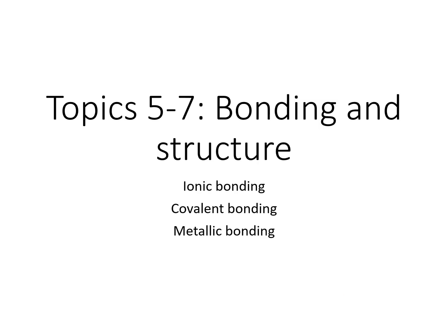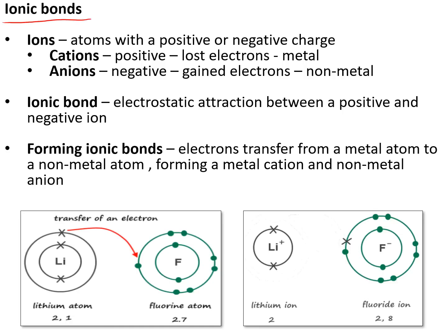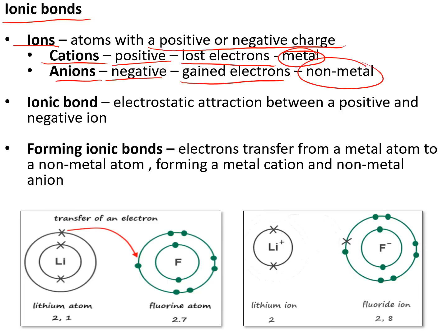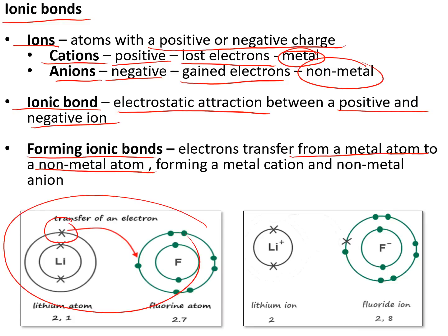Topics 5 to 7: bonding and structure. Ionic bonds form when a positive ion is attracted to a negative ion. Ions are atoms with a positive or negative charge. Cations are positive ones formed by losing electrons — metals form those. Anions are negative ions formed by gaining electrons — done by non-metals. An ionic bond is the electrostatic attraction between a positive and a negative ion. To form ionic bonds, electrons are transferred from a metal atom to a non-metal atom — for example, lithium loses its outer shell electron to fluorine, filling fluorine's outer shell and creating oppositely charged ions that are attracted to each other.